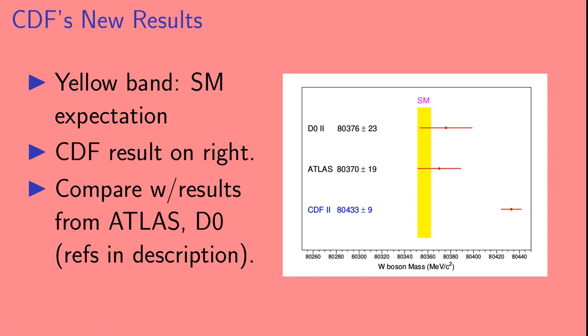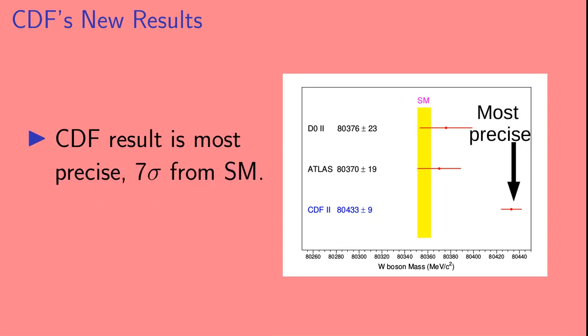So here we have a plot of the W boson mass results. The yellow band is the standard model prediction with its error bar. The CDF result is the bottom one, off to the right. The other two measurements are from ATLAS, which is at LHC, and D0, which, like CDF, was at the Tevatron. The CDF result is the most precise and 7 sigma larger than the standard model prediction.